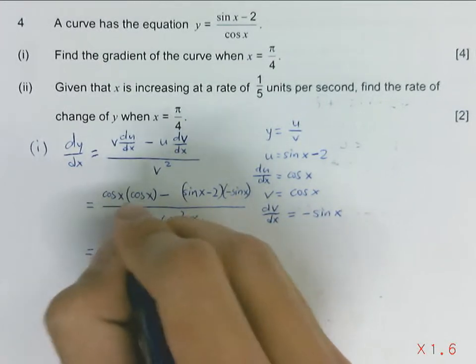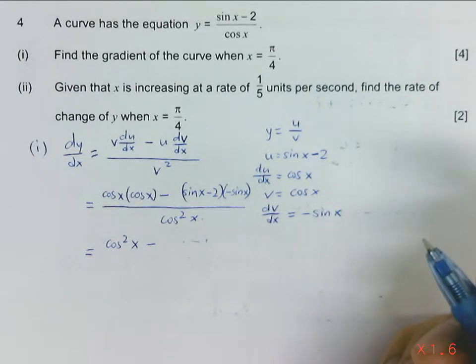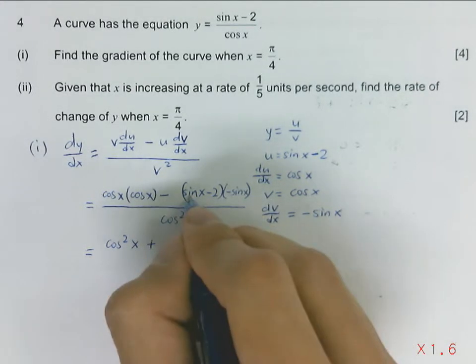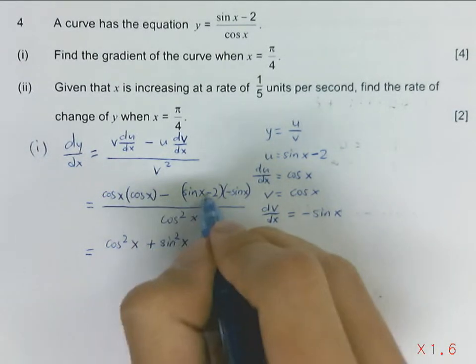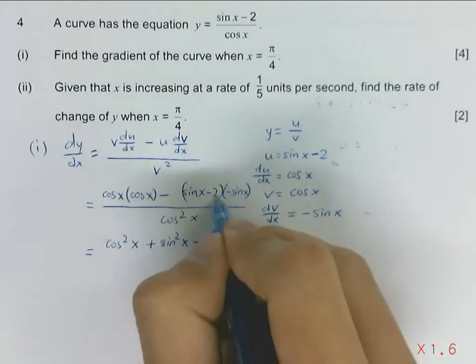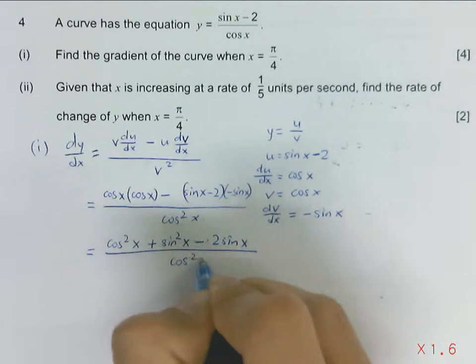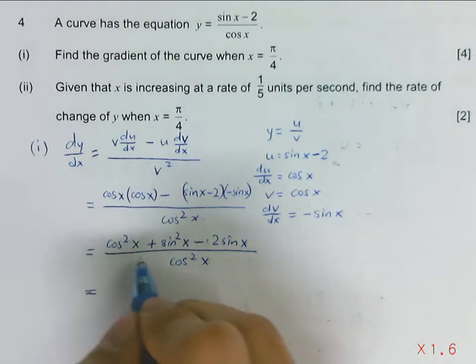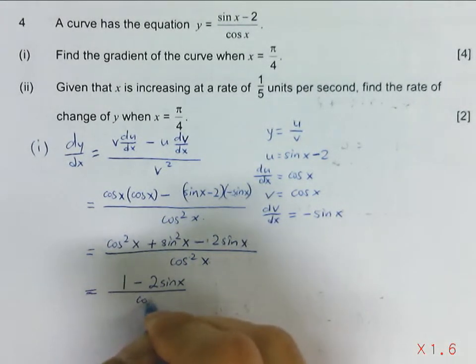This will give us cosine squared x minus, minus sine times sine gives positive sine squared x, and negative times negative gives negative 2 sine x. This is a trigonometry identity - cosine squared x plus sine squared x equals 1. So we get 1 minus 2 sine x over cos squared x.